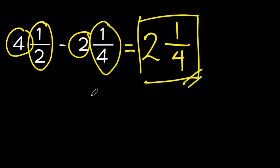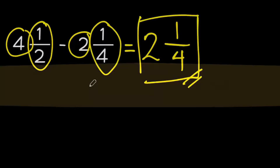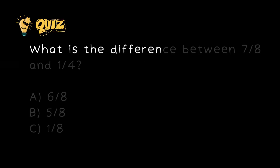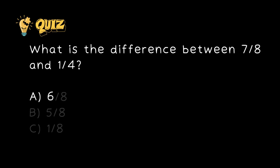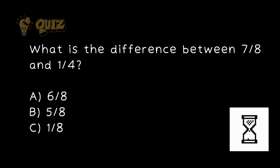Congratulations, math wizards! You've mastered the art of performing subtraction with rational numbers. Now you can confidently use the power of subtraction to uncover hidden treasures in the world of mathematics. Before we wrap up, let's tackle the final quiz question. What is the difference between 7 over 8 and 1 over 4? A. 6 over 8. B. 5 over 8. C. 1 over 8. What is your answer?